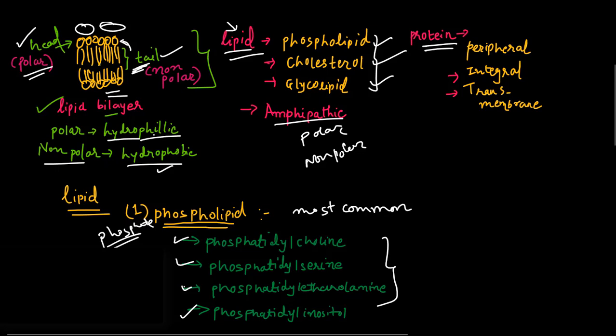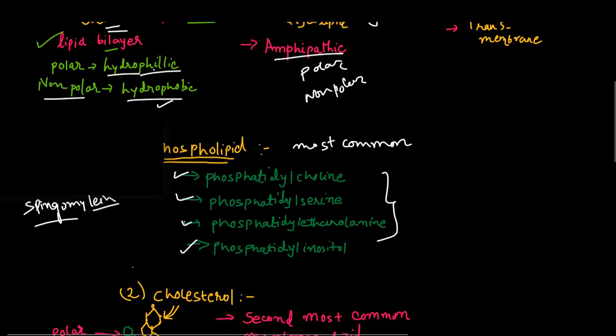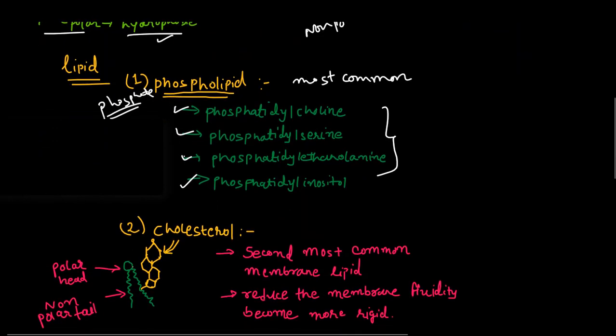There is sphingomyelin, which is related to phospholipid, in which glycerol has been replaced by sphingosine. The alcohol group in sphingosine is choline.